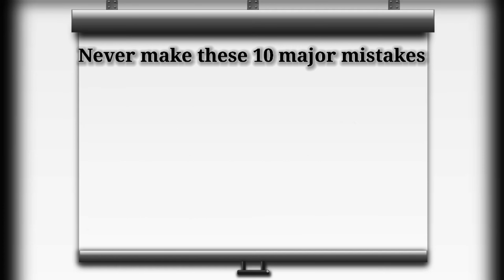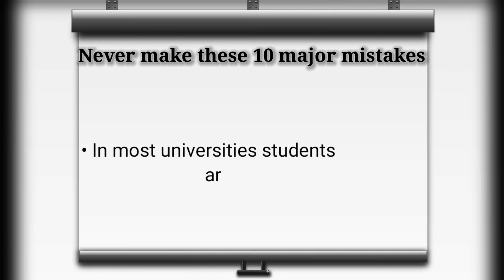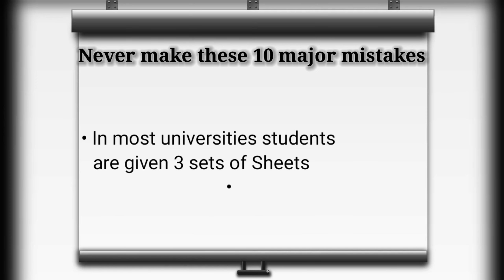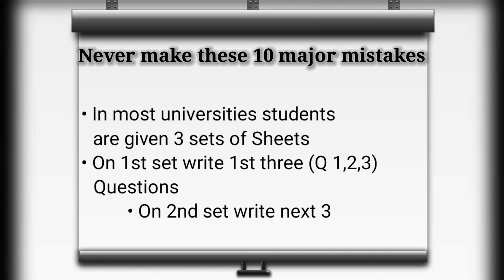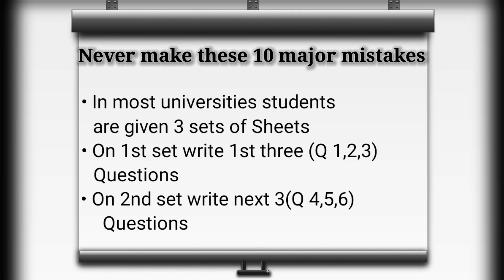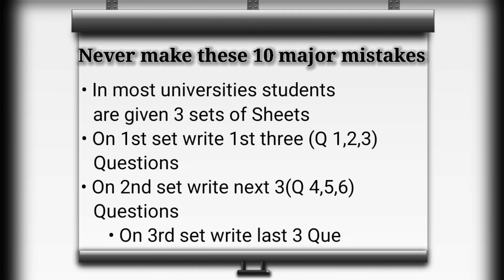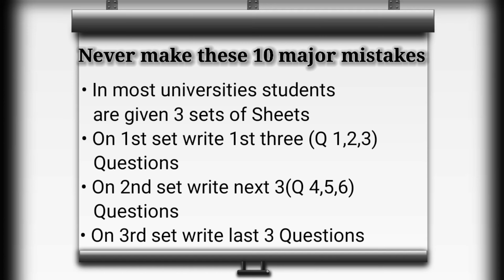The tenth and last mistake is related to the set of answer sheets. You are given three sets of sheets, and in every set you will have to write specific questions — questions one, two, and three in the first set; the next three in the second set; and questions seven, eight, and nine in the third set. Never try to attempt a question on the wrong set of sheets. For example, if you write question number four on the third set of sheets, it will not be checked and will be marked irrelevant.